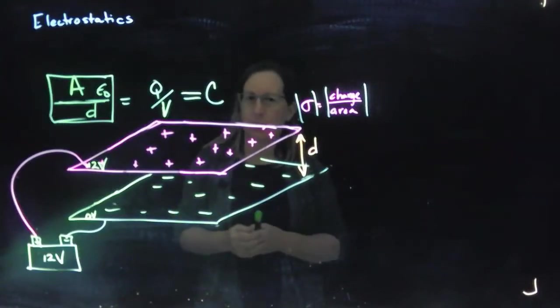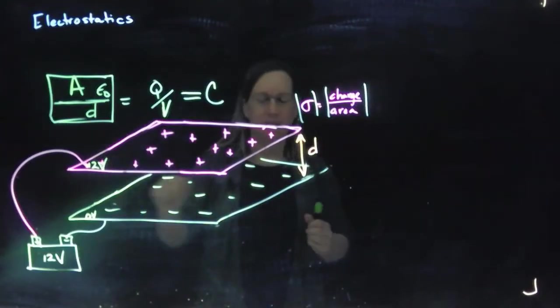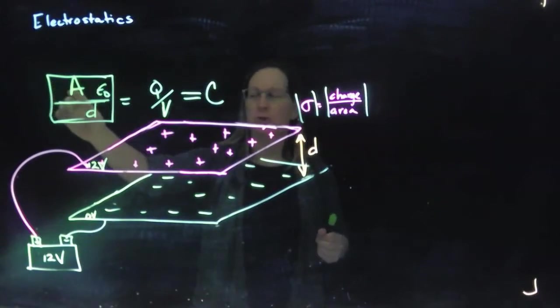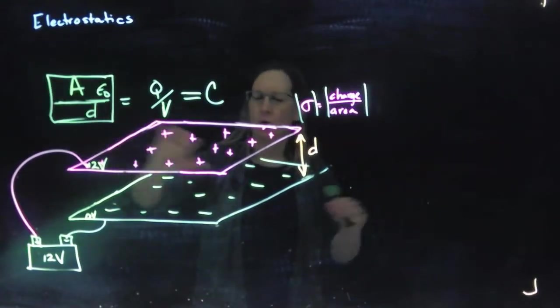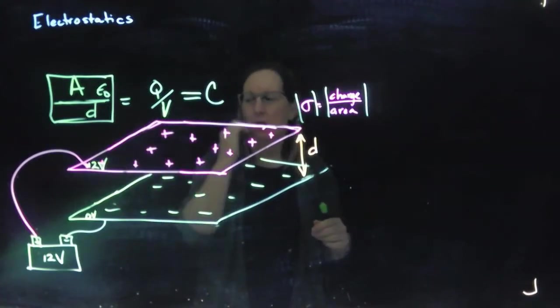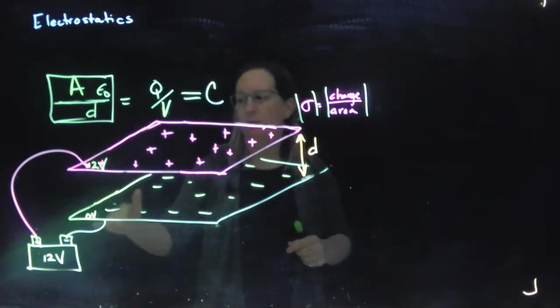There's one other way to increase the capacity of a capacitor situation. We can change the geometry, the area, we can make that bigger. We can make the spacing smaller so we get more charges that can sit on the plate at a particular potential difference.